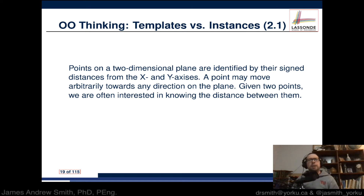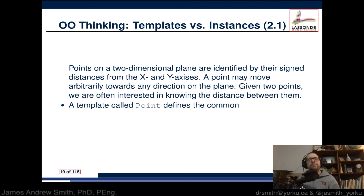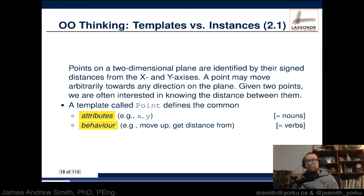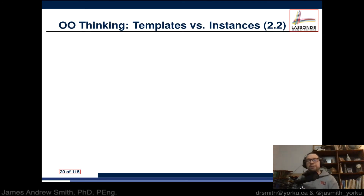Let's look at another example: points on a two-dimensional plane, identified by their signed distances from the x and y axes. A point may move arbitrarily in any direction on the plane; given two points, we're interested in knowing the distance between them. A template called Point defines common attributes — the positions x and y, the nouns — and common behaviors, the verbs: moving up, moving down, getting the distance, etc.